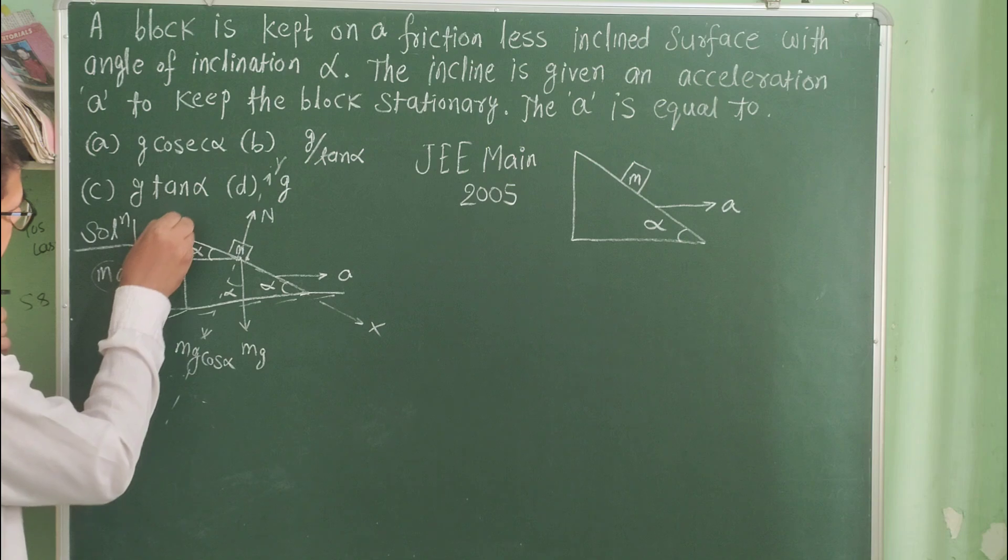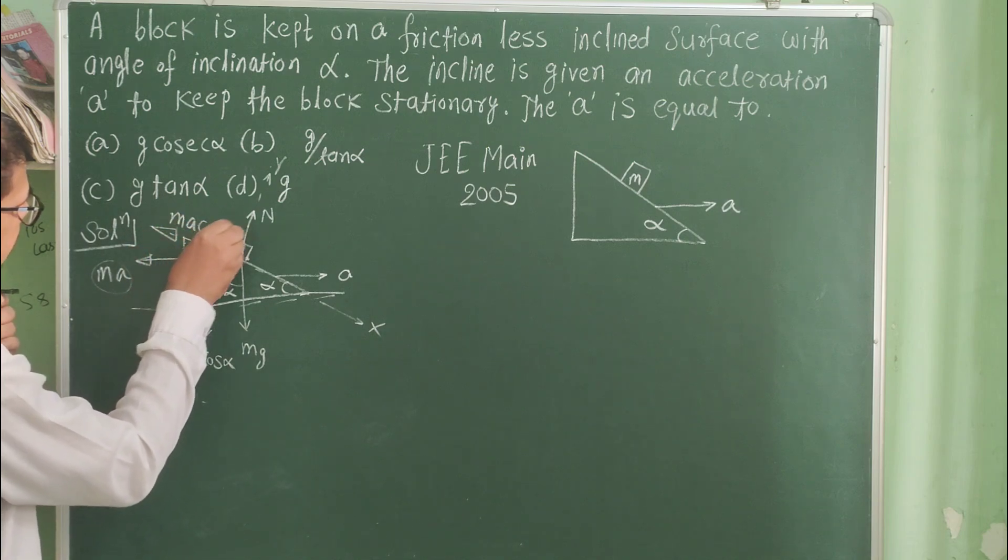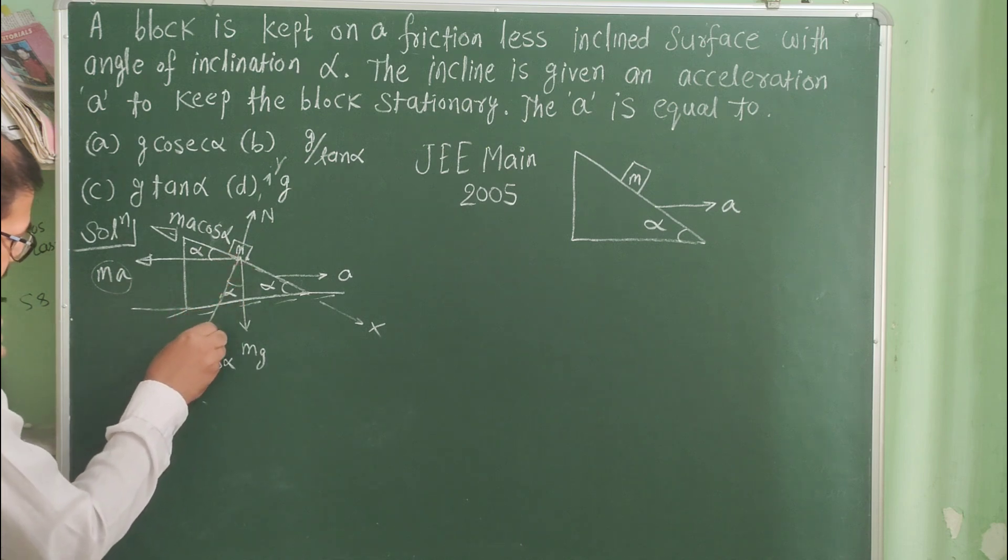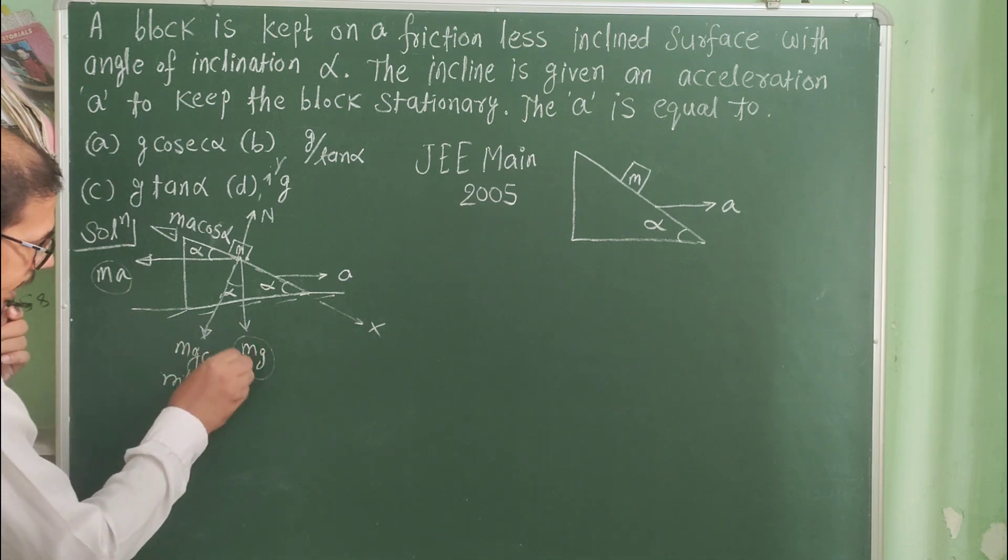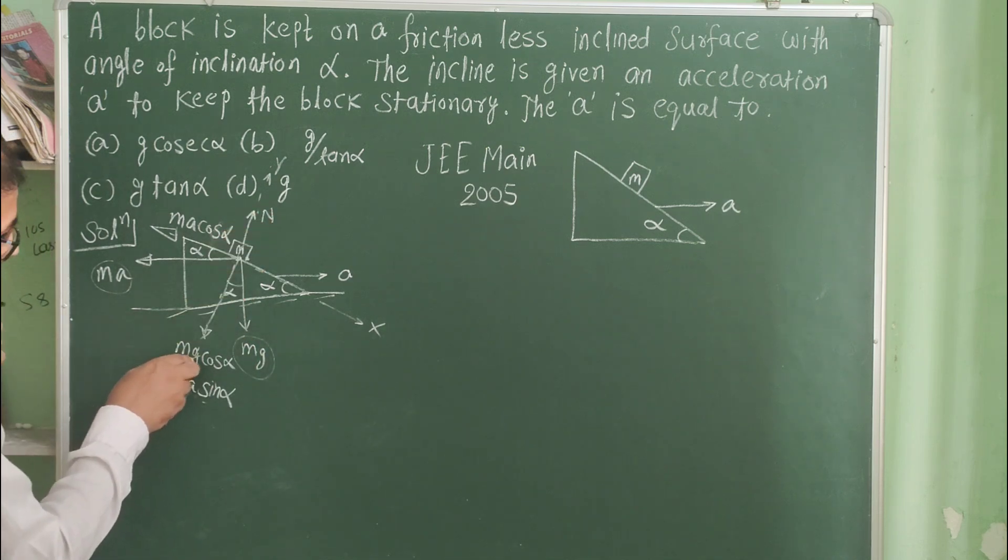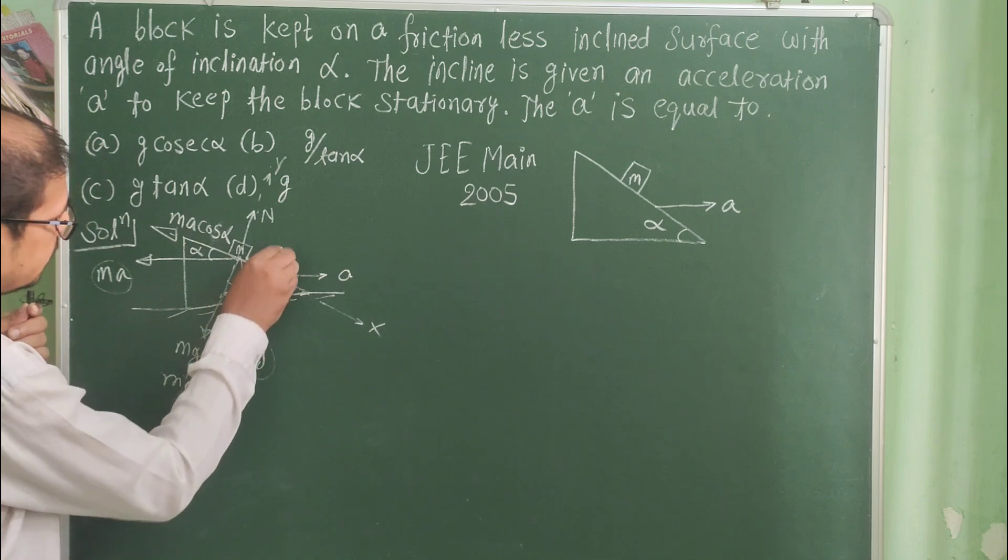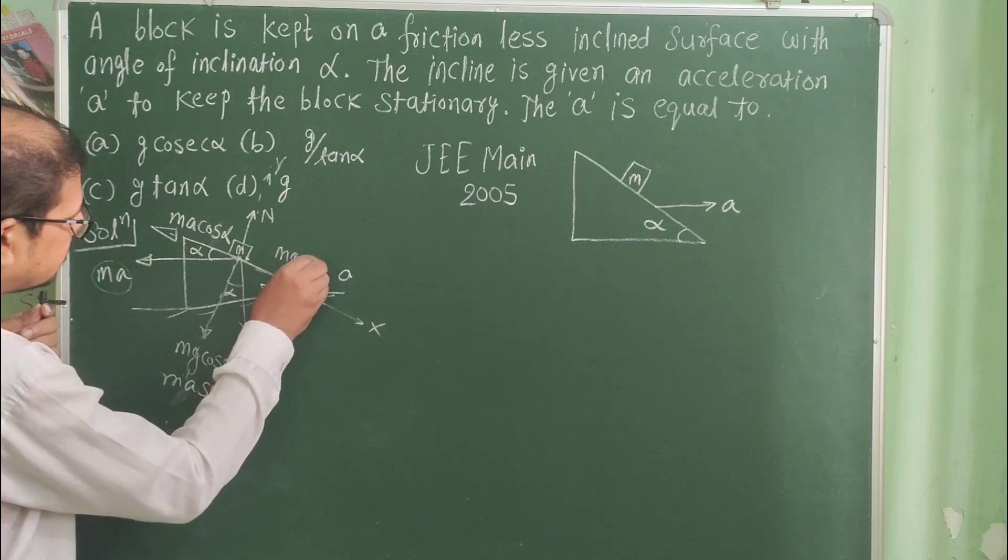This is the x-axis, ma cos alpha. And another component here, ma sin alpha. Component of mg along y-axis is mg cos alpha and along the x-axis is mg sin alpha.